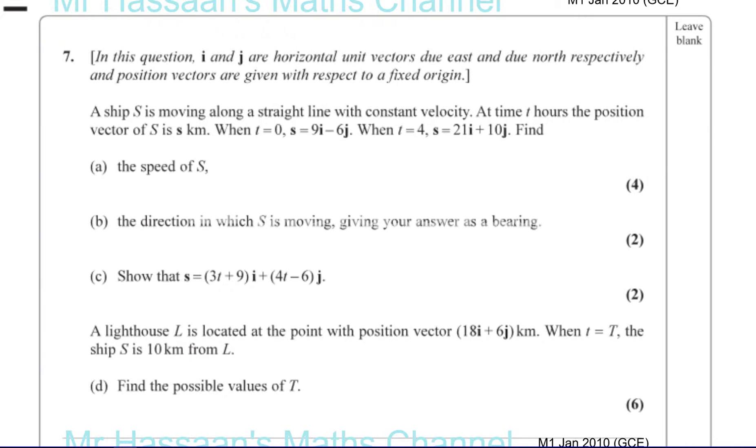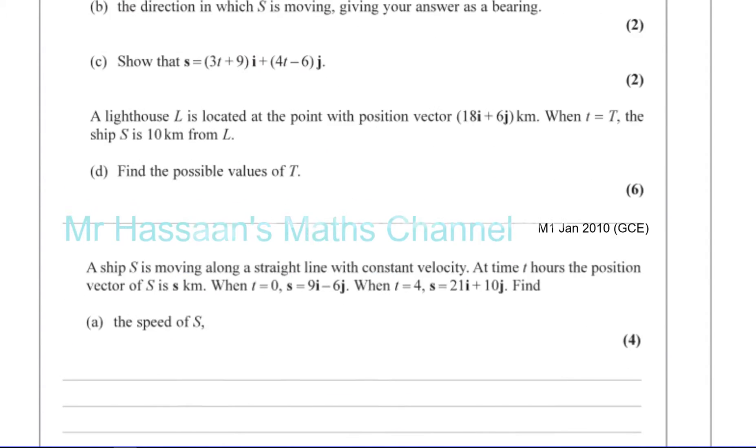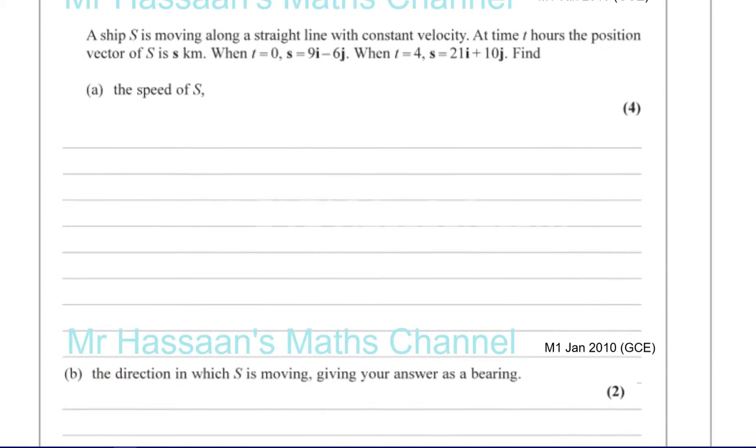A ship S is moving along a straight line with constant velocity. At time t hours, the position of the ship is s kilometers. When t equals 0, s equals 9i minus 6j. When t equals 4, s equals 21i plus 10j. Find the speed of S.